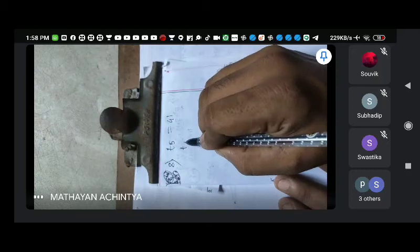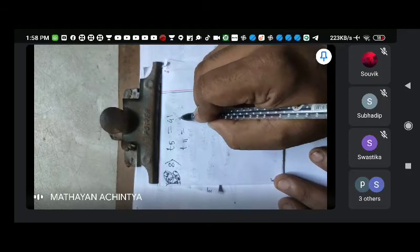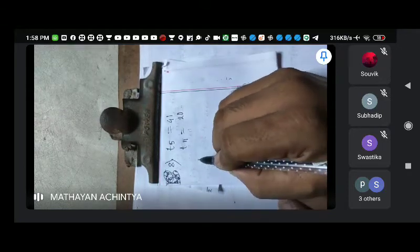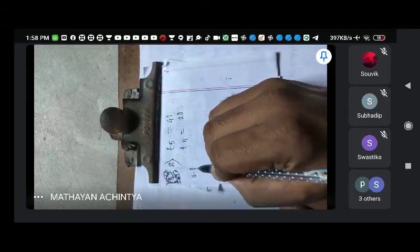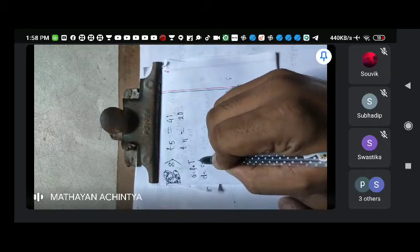11th term is 20. That means the first term is a and the common difference is d.